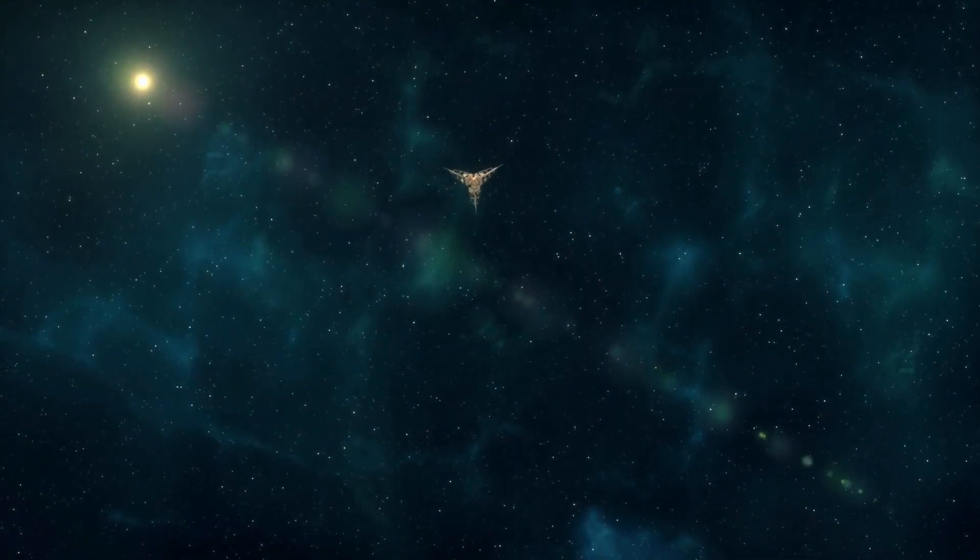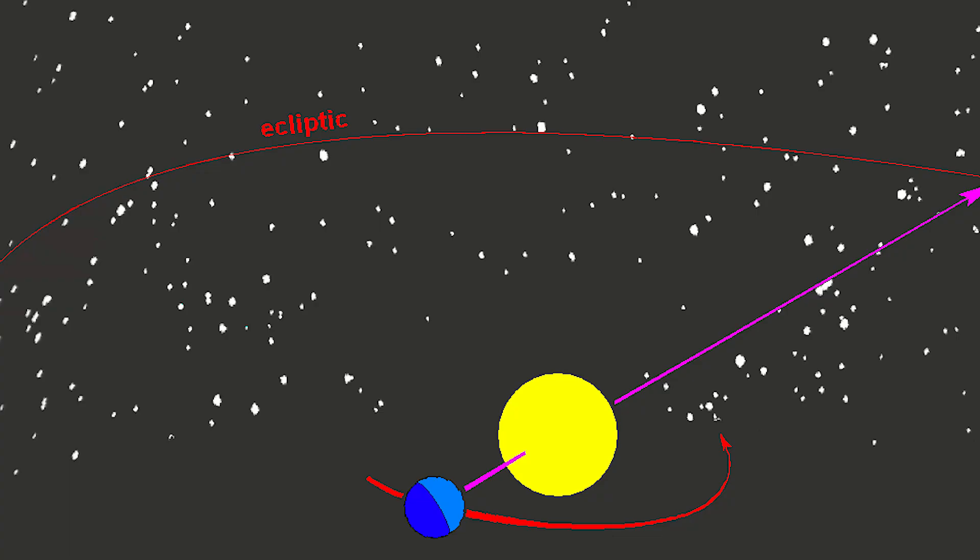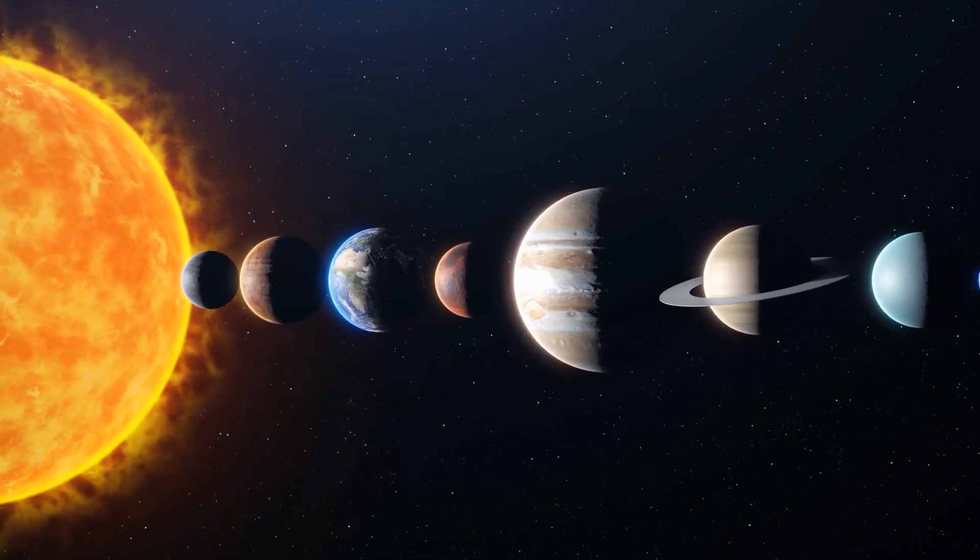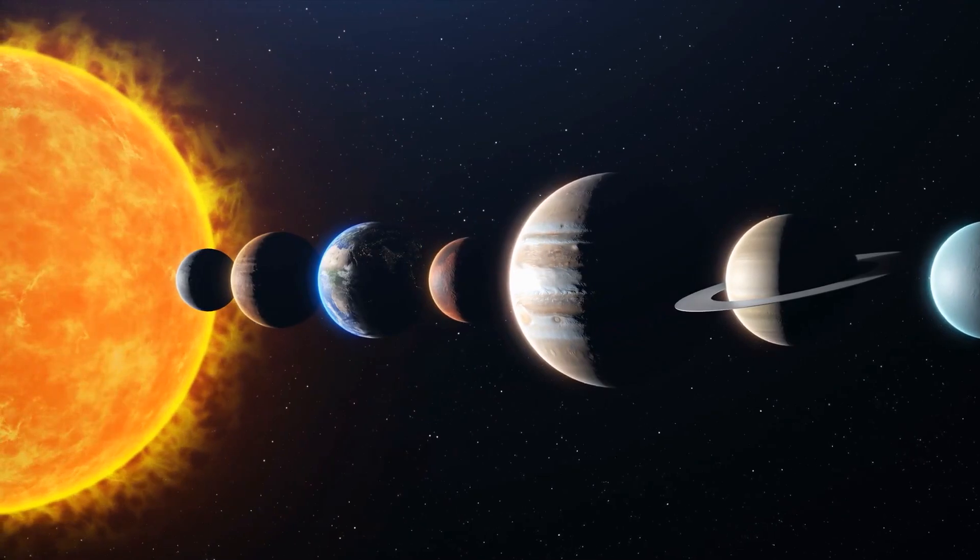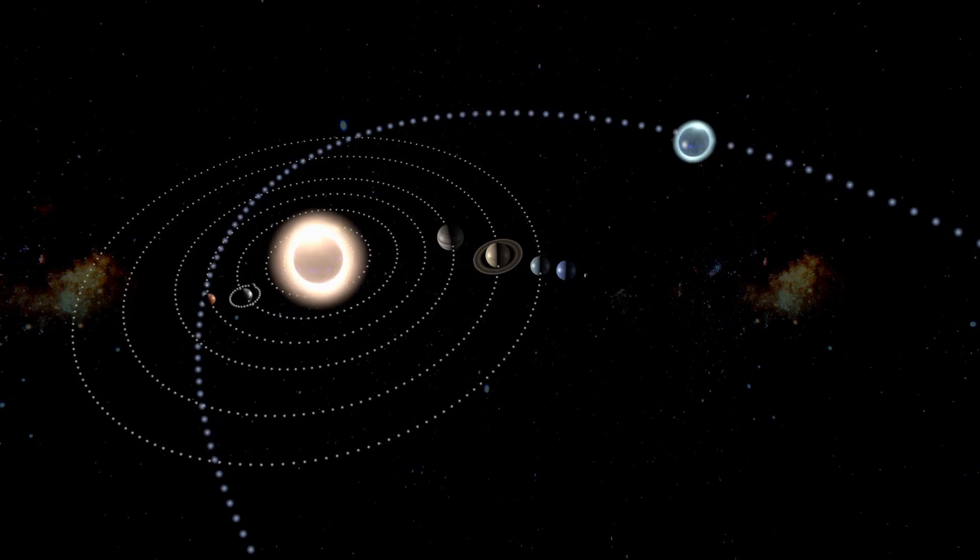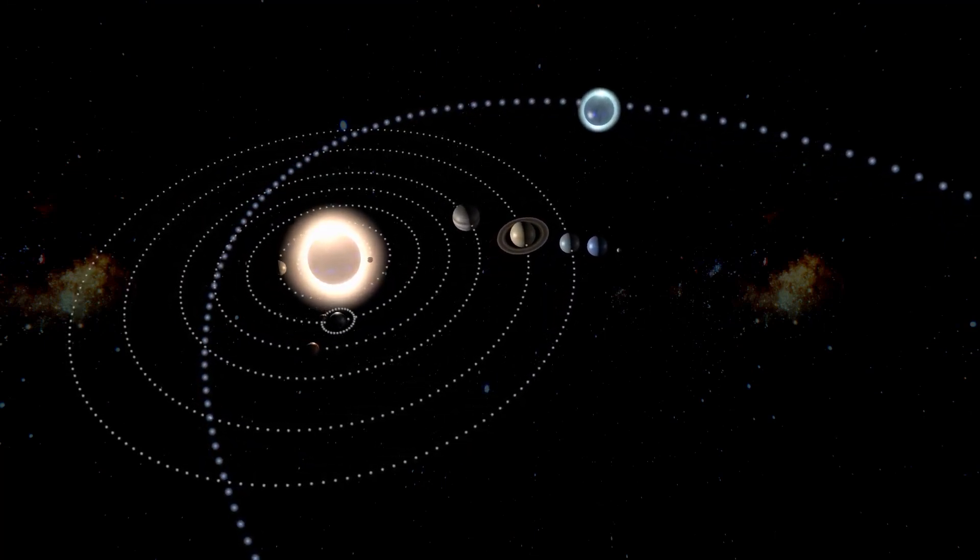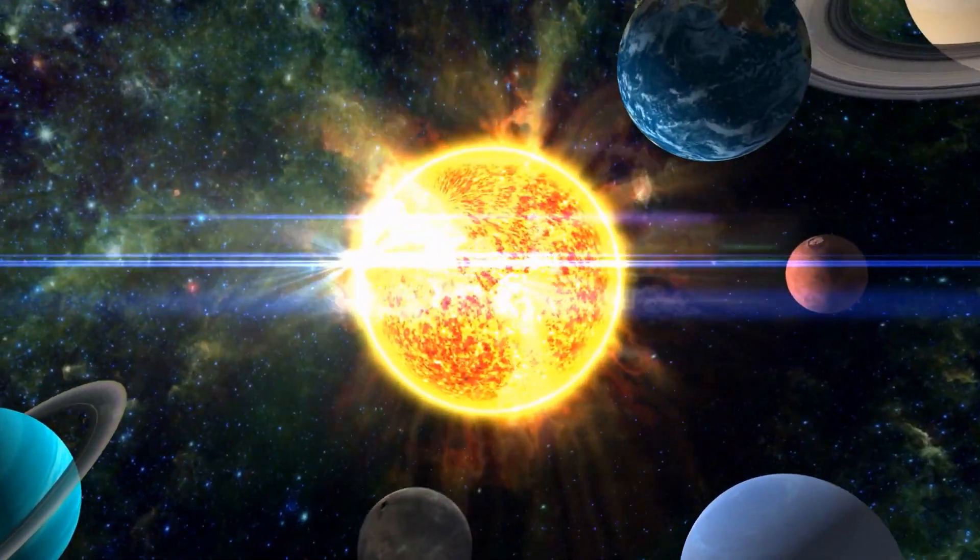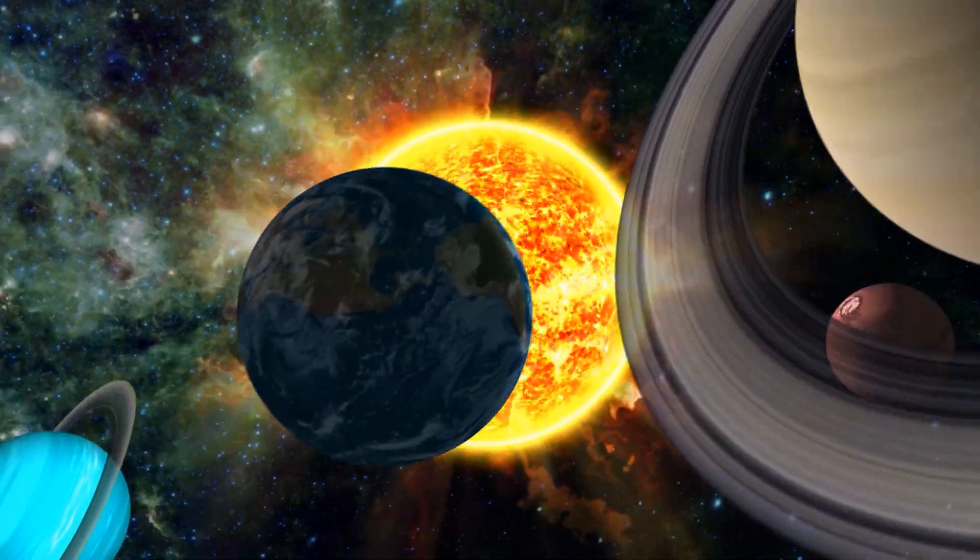In the meantime, Voyager 1 was traveling around 35 degrees above the ecliptic plane and getting closer to the heliopause at a speed of about 520 million kilometers per year. At the conclusion of its journey to Neptune, the probe passed into the outermost region of the solar system on August 25th 2012. At a speed of 470 million kilometers per year, Voyager 2 likewise reached the end of the solar system by following a path that was around 48 degrees above the ecliptic. Its speed was marginally slower than that of its identical sibling.